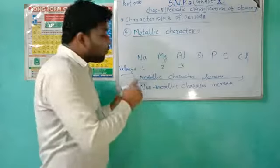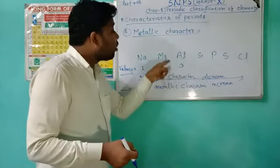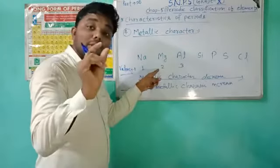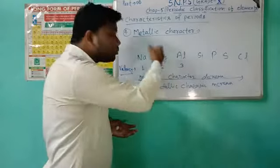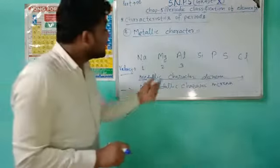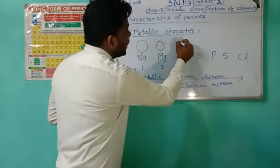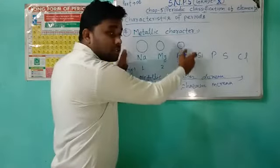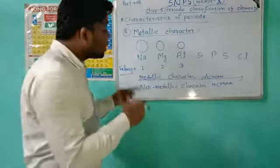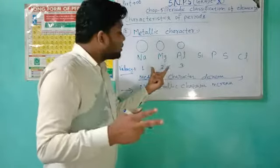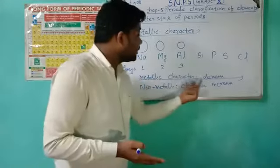Magnesium is harder to lose two electrons because it is smaller in size than sodium. Aluminium is even smaller than magnesium. So sodium has the biggest size, magnesium is a little smaller, and aluminium is the smallest. Losing one electron is simplest, losing two is harder, and losing three electrons is the hardest. So metallic character decreases across these three elements.